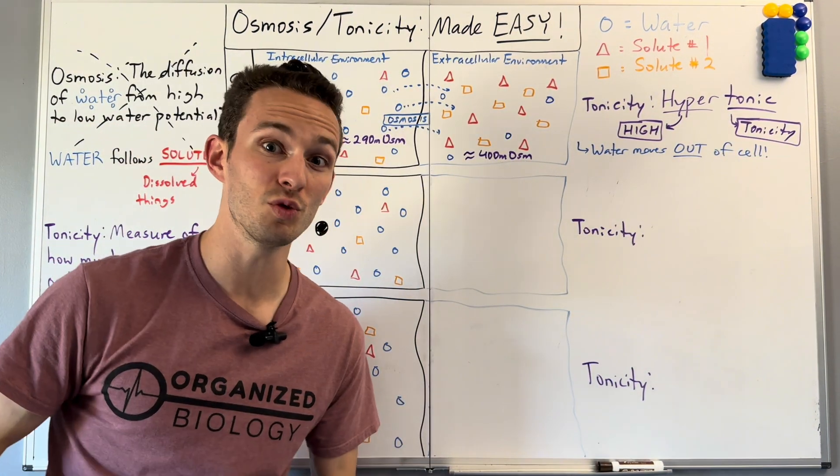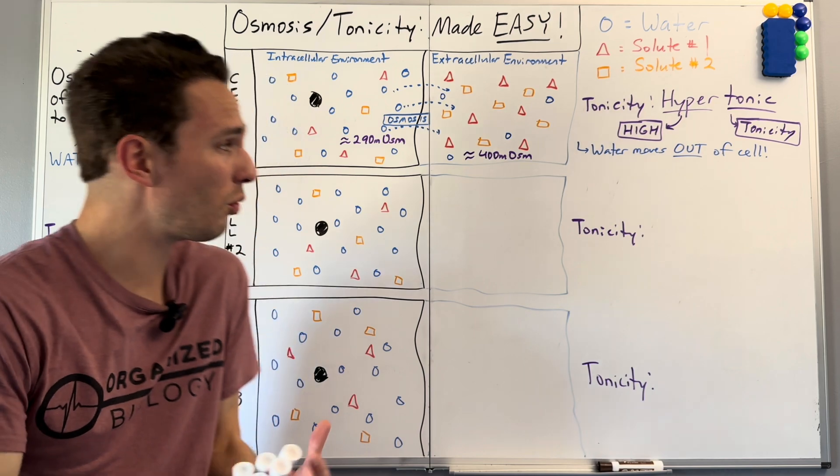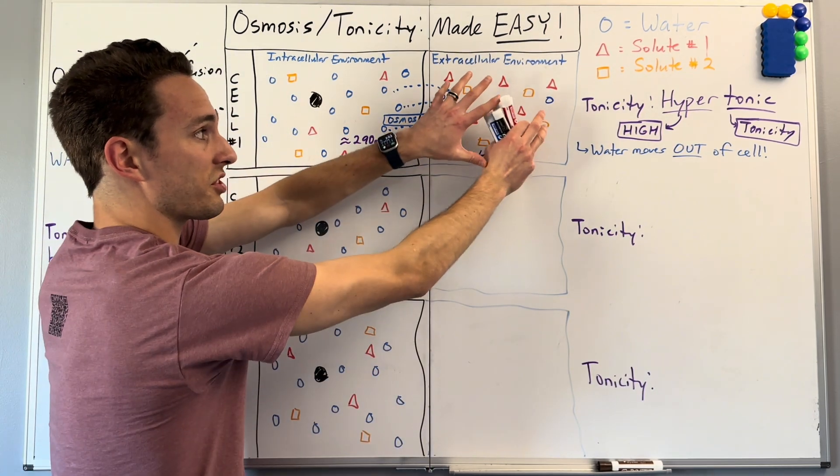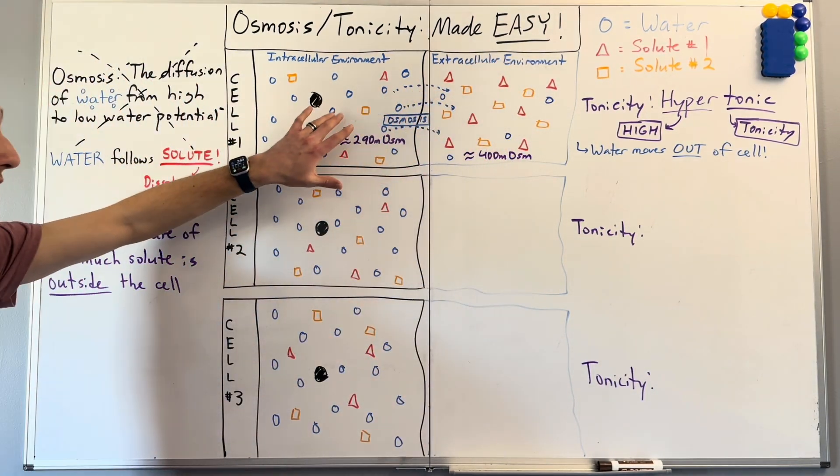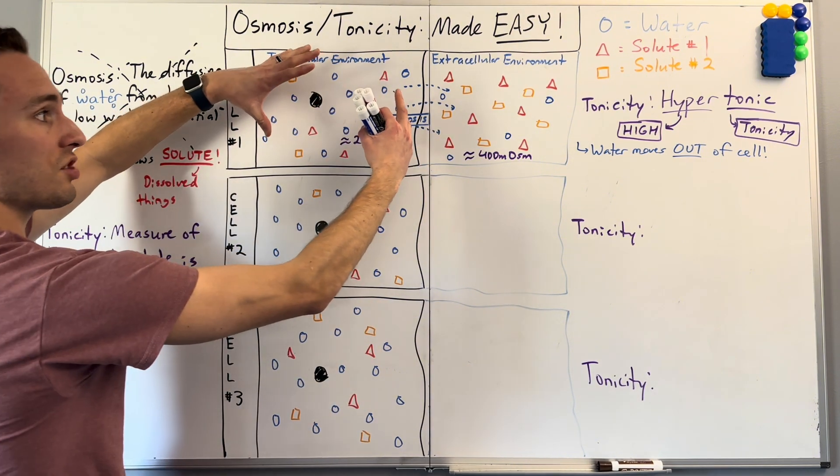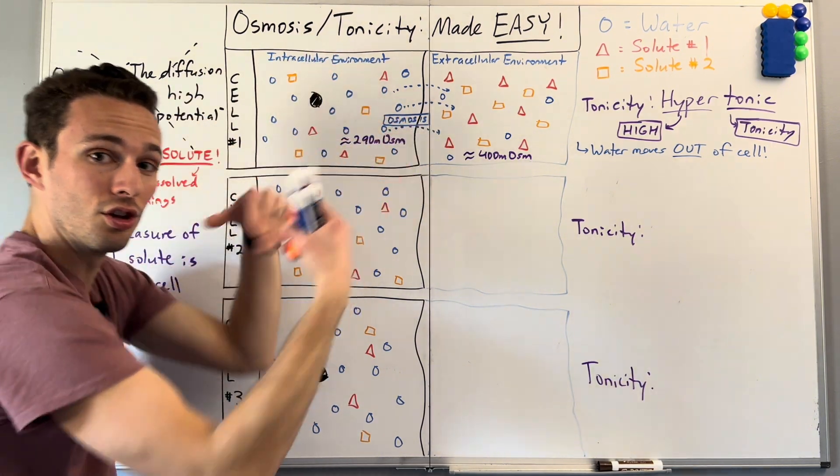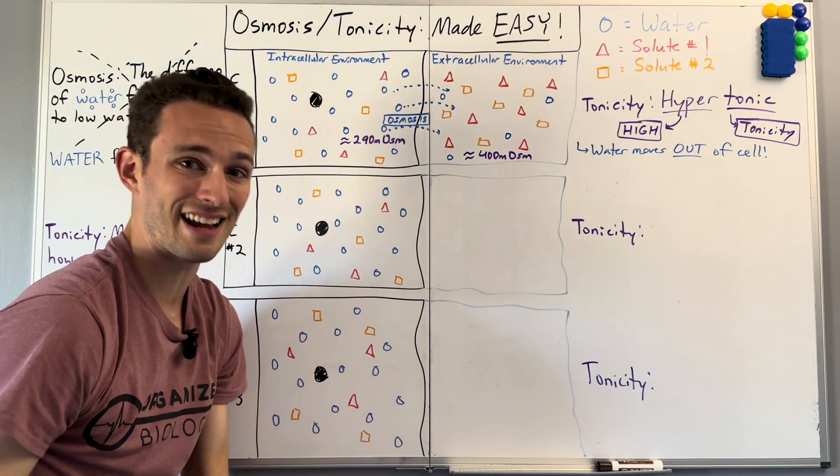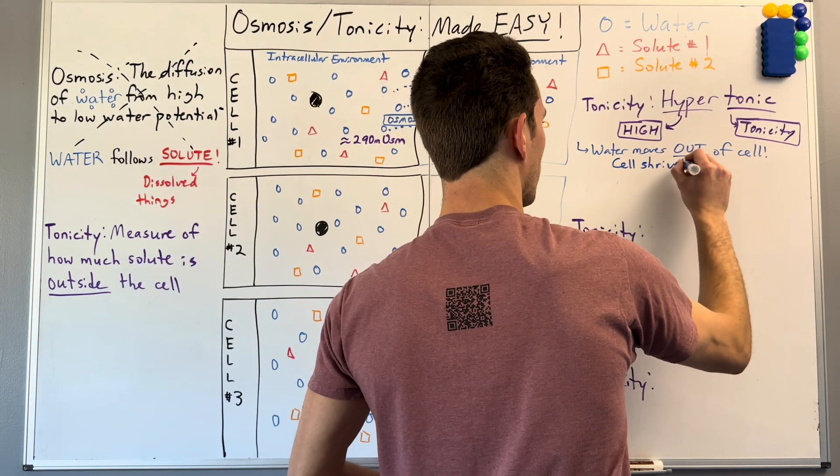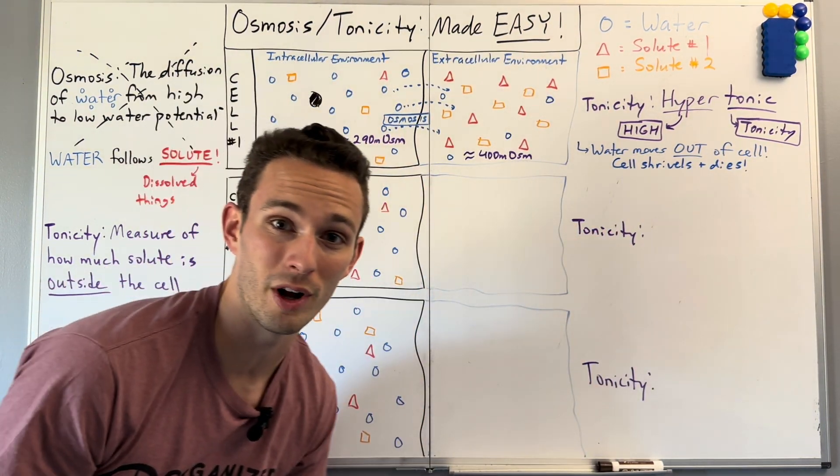So this is what happens when you drink ocean water. Ocean water is super duper condensed with solutes. So you're bathing your cells in a very high solute environment. The cell loses water. It will shrivel, lose its shape, lose its function and likely die. So don't drink ocean water, people.